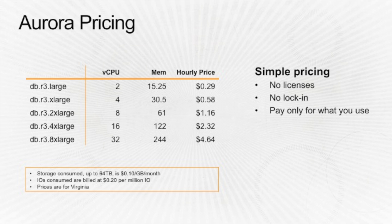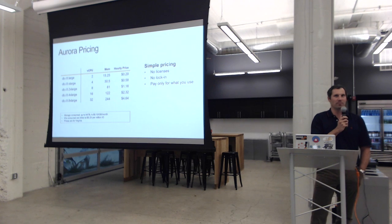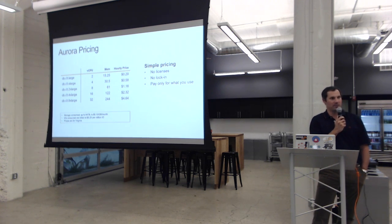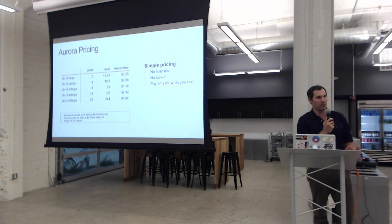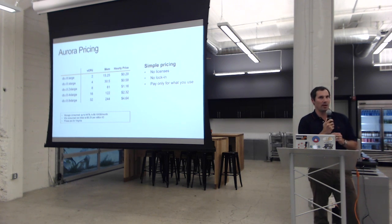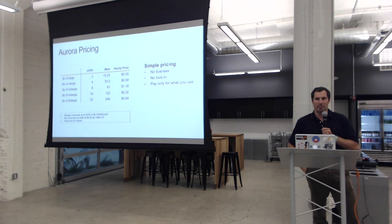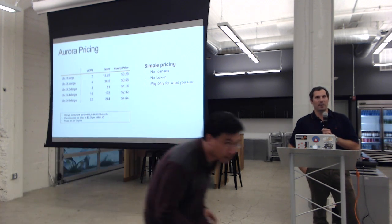On pricing, we start with the R3 Large instance at $0.29 per hour, going up to $4.64 per hour for the R3 8XL — pretty inexpensive. These are expected prices for the Virginia region, with some variability across geographic regions. Storage will be $0.10 per gigabyte per month, and you'll pay $0.20 per million IOs.